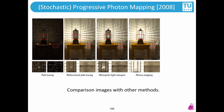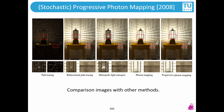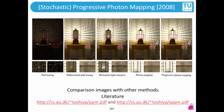For the difficult previous scene with lots of SDS transport, photon mapping kind of worked but again overblurred many of the important features. Progressive photon mapping takes care of this. You can read the papers referenced here.